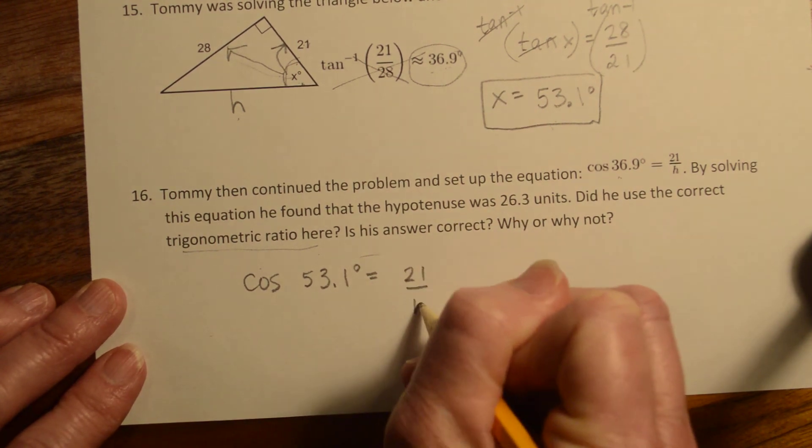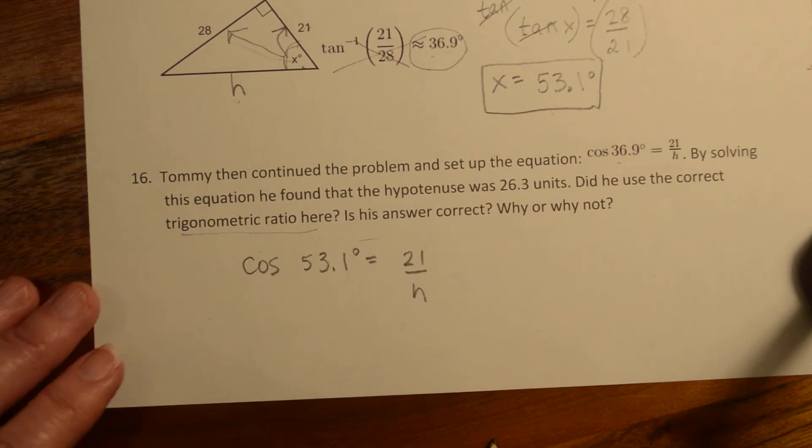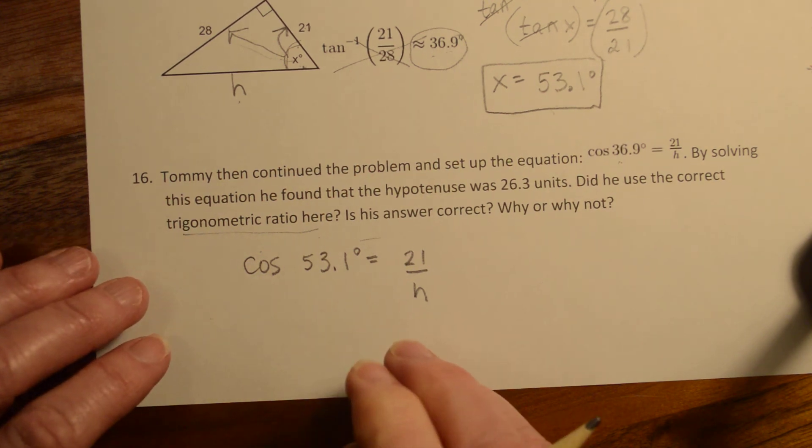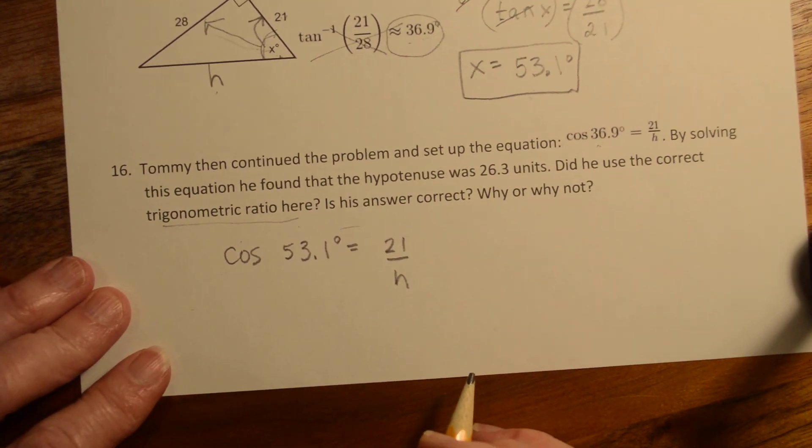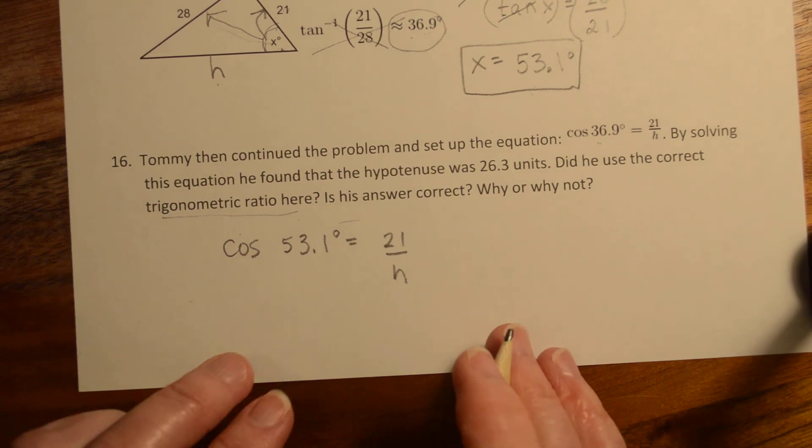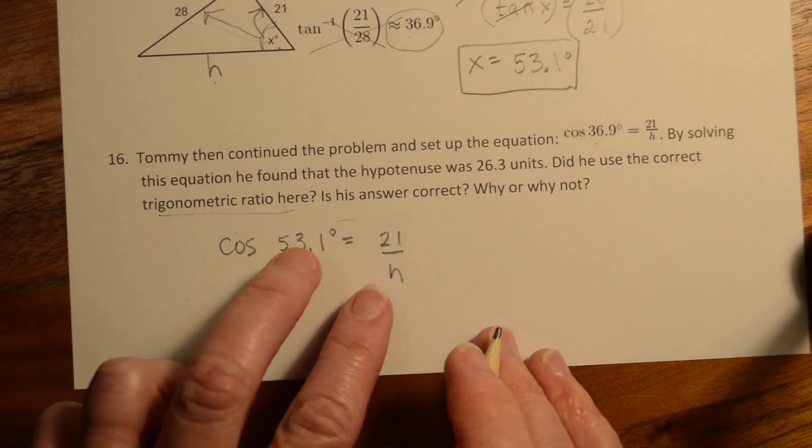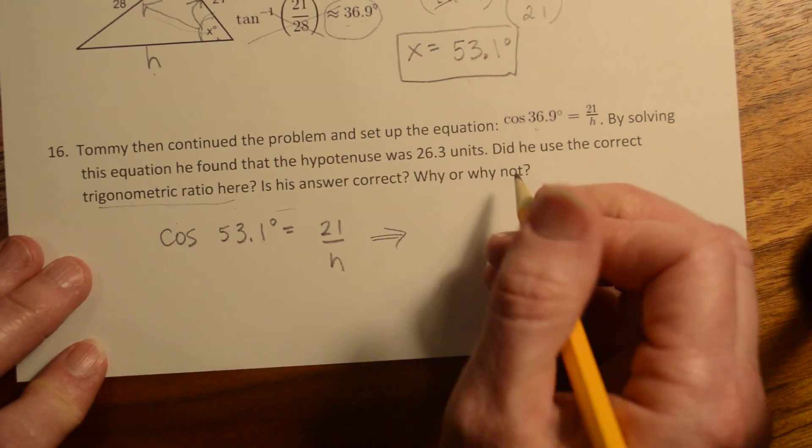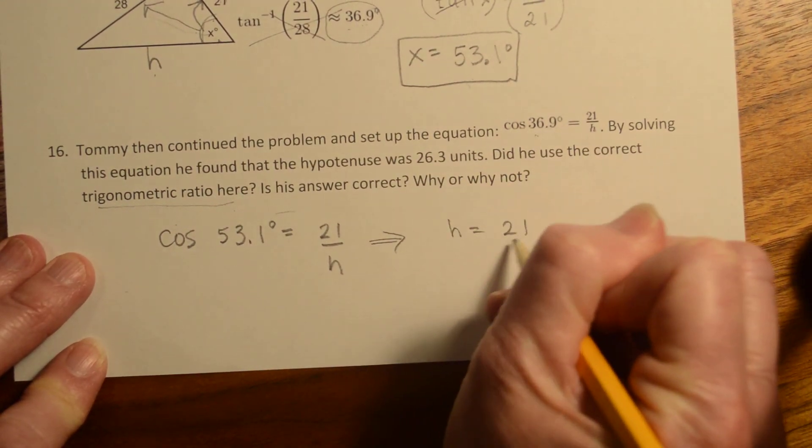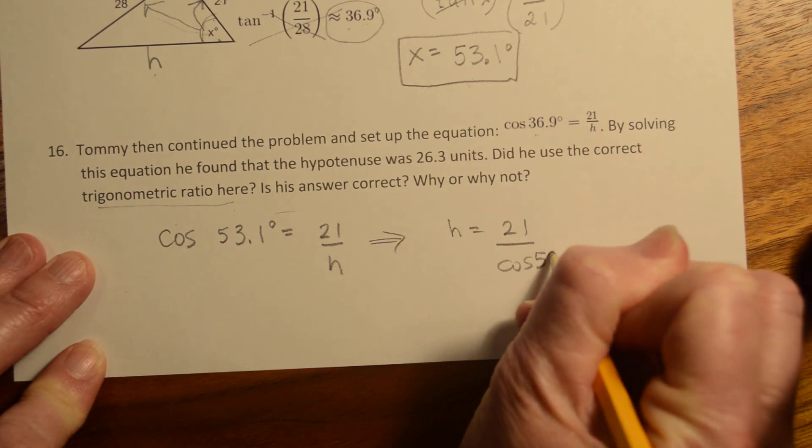He would have gotten 21 over h. All right, so pause. If you didn't get this far, pause and see if you can figure that out. All right, I'm going to use one of Fred's five favorite tricks here and just interchange those two right there. So this is the same thing as h equals 21 over cosine of 53.1.